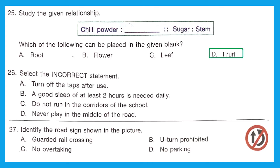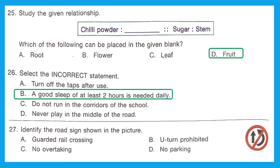Question 26: Select the incorrect statement. Option A — turn off taps after use — correct. Option B — a good sleep of at least two hours is needed daily — this is wrong, because a good sleep of at least seven hours is needed daily. Option B is the incorrect statement.